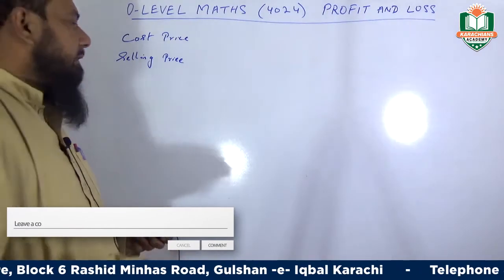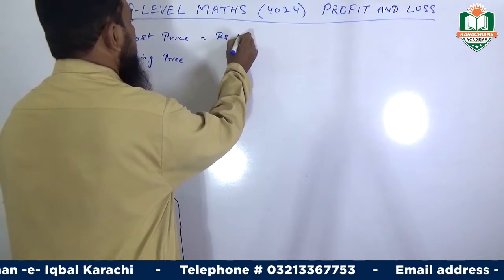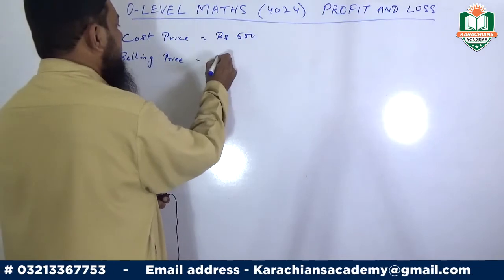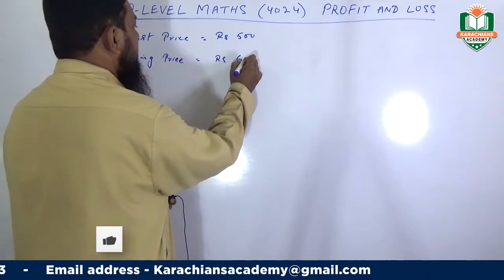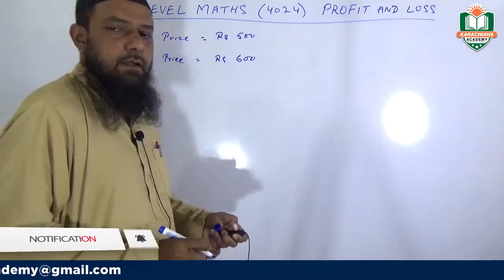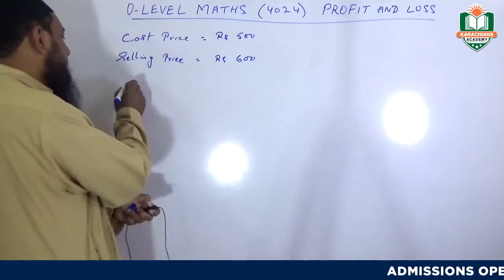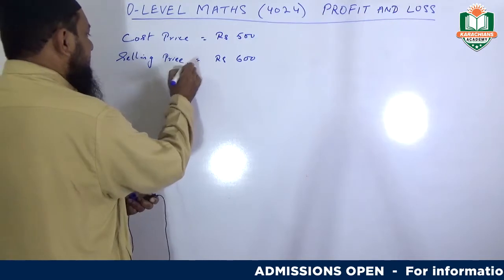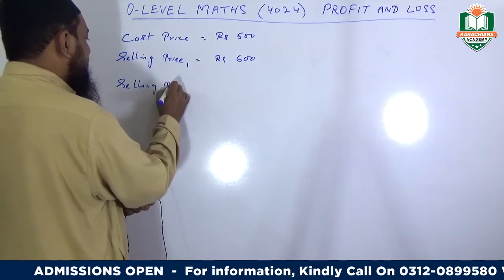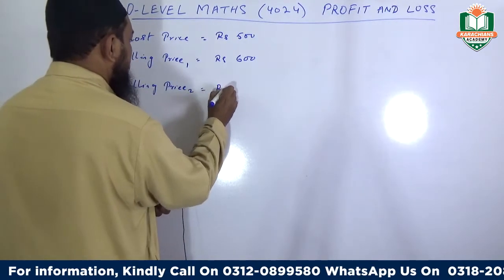Let's suppose we purchase an article and I am getting 100 rupees extra for this amount — that is my profit. The profit and selling price: next day, the selling price of the same article is 400 rupees.